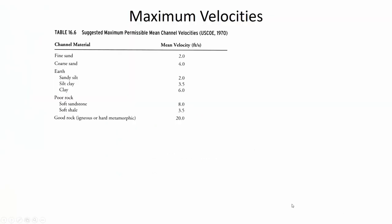This is the last slide of the semester — a table of suggested maximum velocities depending on the channel material. For rock, water can flow at 20 feet per second. Maximum velocity is a function of the material: sand is washed away more easily than cohesive clays, different grasses can resist different velocities, and above 2.4 meters per second, a reinforced lining is recommended.